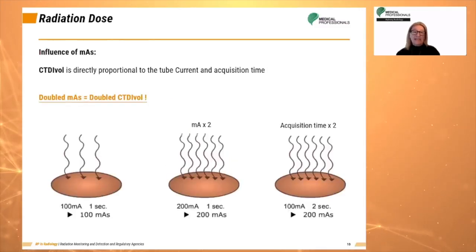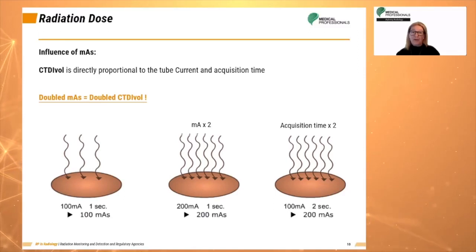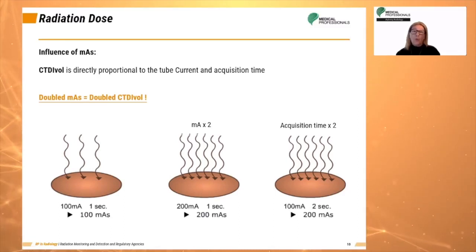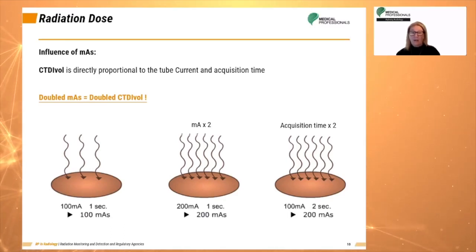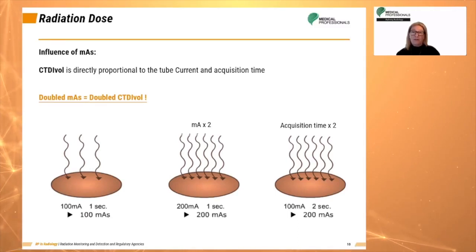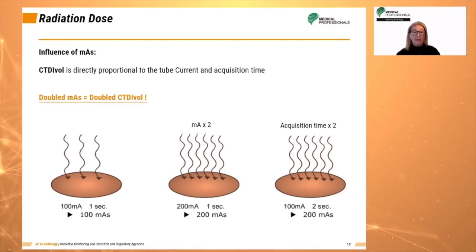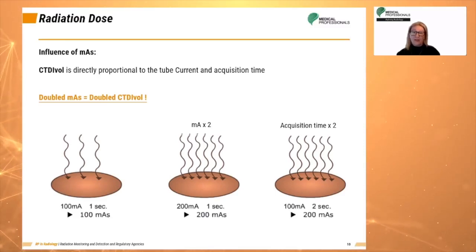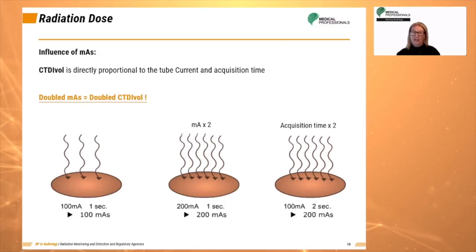The volume CTDI is determined from the CT acquisition parameters, which are kV, MAS, and pitch. When we double the MAS, we increase the volume CTDI by double. 100 MAS can equal 100 mA times one second. Either doubling the MA or doubling the acquisition time will give us 200 MAS, which will improve the image quality.